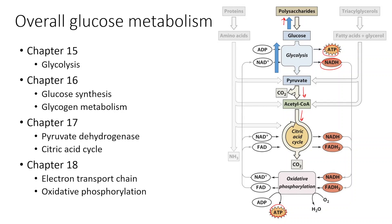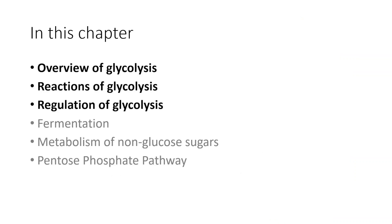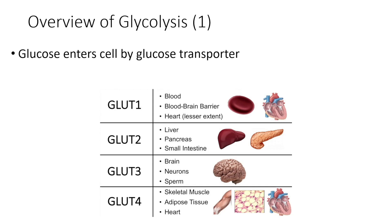So in this chapter we're going to start from the beginning with glycolysis. We'll start with an overview of glycolysis, go through all of its reactions, and then discuss regulation of when and how glycolysis happens in a cell. Other topics in Chapter 15 — fermentation, the metabolism of non-glucose sugars, and the pentose phosphate pathway — will not be discussed in class, but I encourage you to read more about them if you're interested.